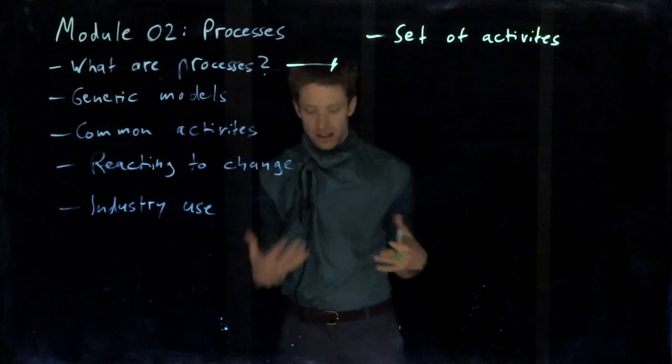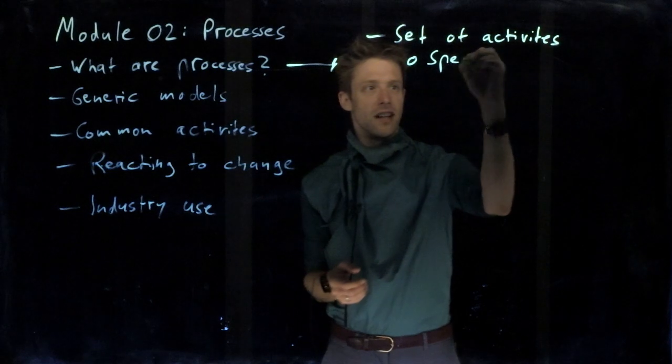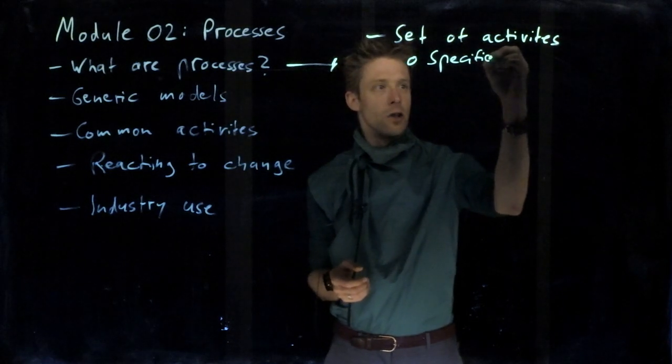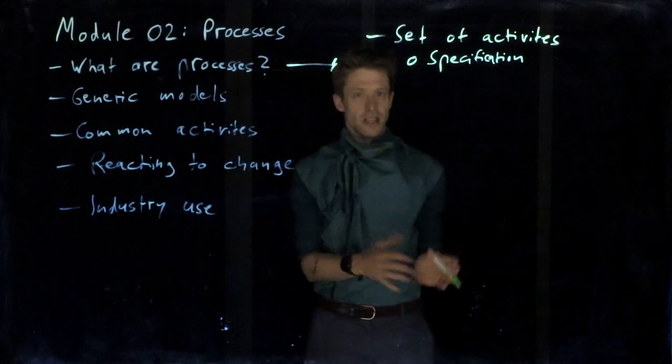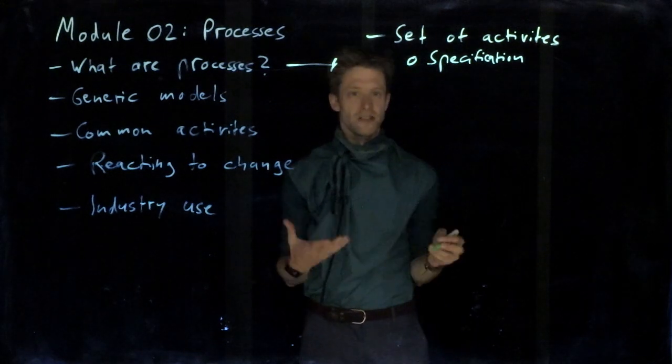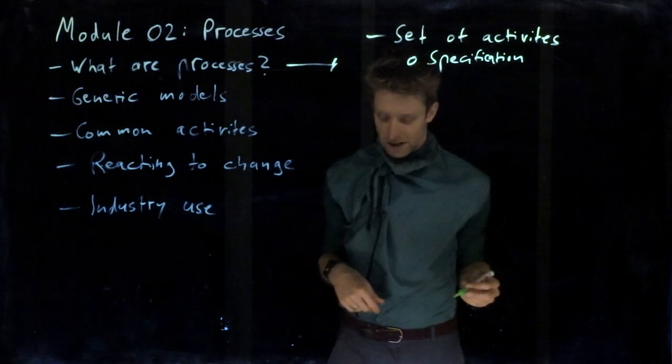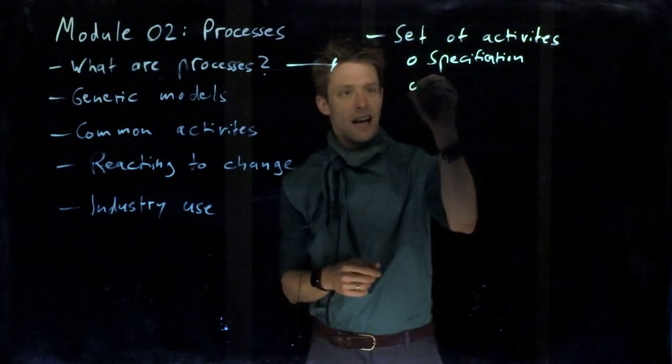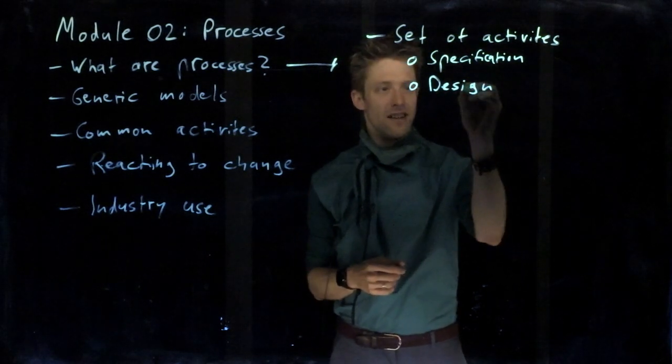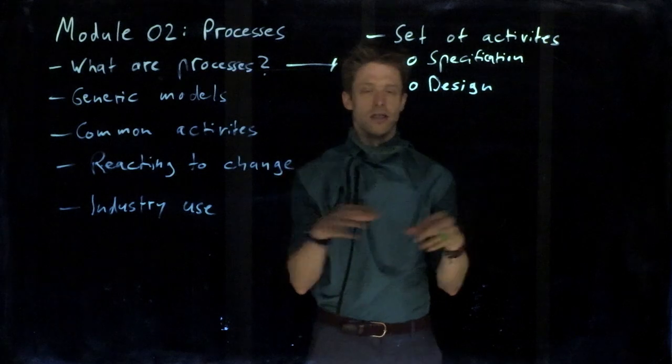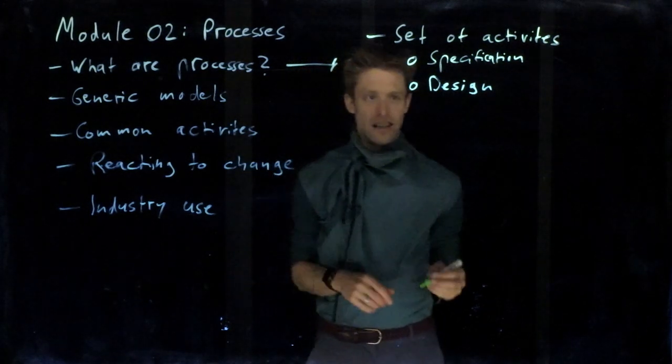Typical activities that we have are, for example, the specification. So as we discussed in the first module, the specification of requirements, the specification of needs, the specification of the design of the system. And then we have as a next step design, so breaking down the system into subsystems, deciding how to structure it and things like that.